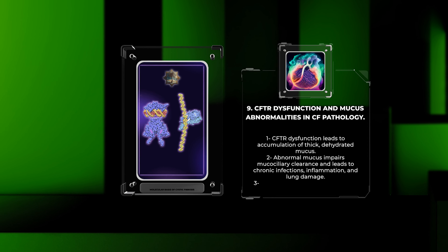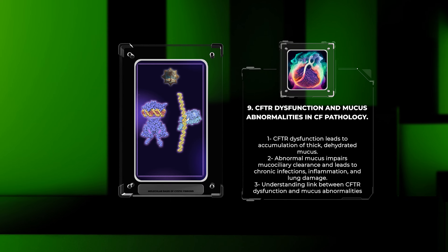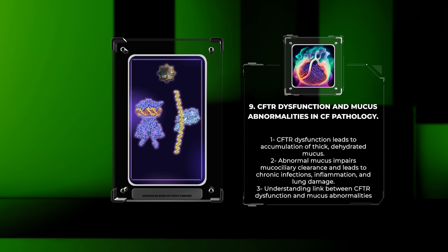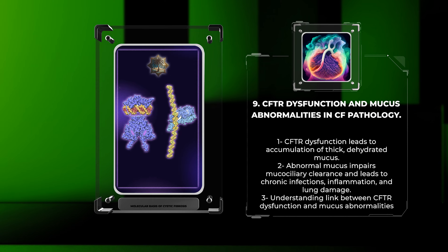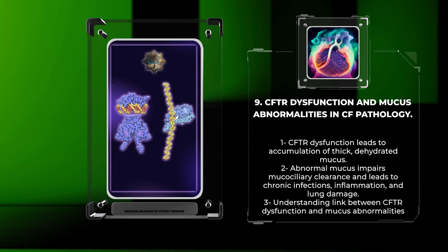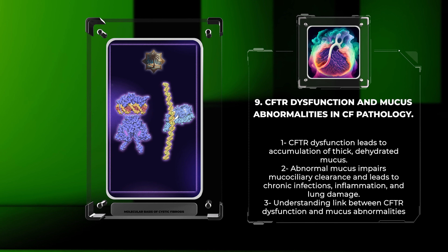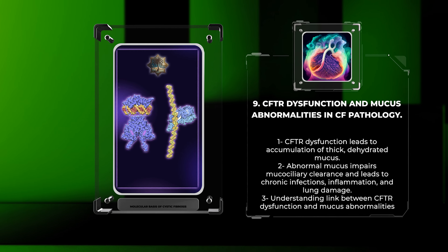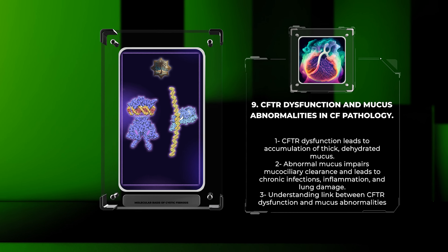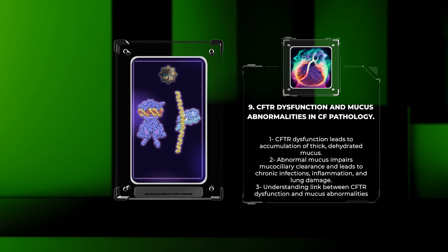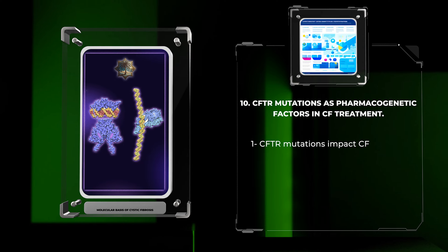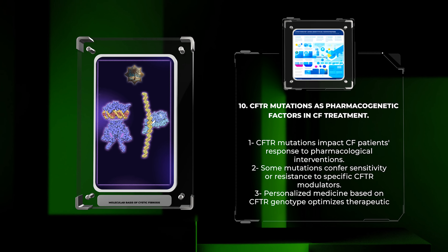CFTR dysfunction leads to the accumulation of thick, dehydrated mucus in the airways and other affected organs. This abnormal mucus impairs mucociliary clearance, leading to chronic infections, inflammation, and progressive lung damage. Understanding the link between CFTR dysfunction and mucus abnormalities is crucial for developing therapies targeting mucus clearance in CF.